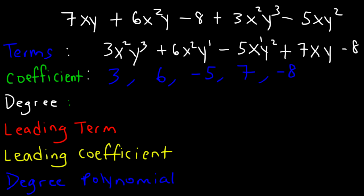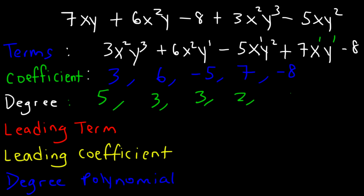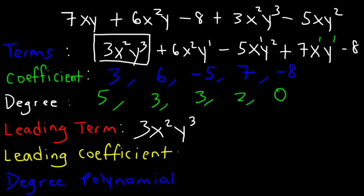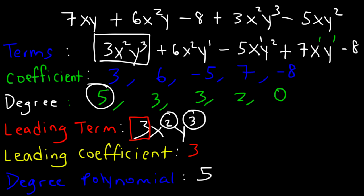The degree of each term is found by adding the exponents. For 3x squared y cubed: 2 plus 3 is 5. For 6x squared y: 2 plus 1 is 3. For 5xy squared: 1 plus 2 is 3. For 7xy: two invisible ones add up to 2. The constant is degree 0. The leading term is 3x squared y cubed with the highest degree. The leading coefficient is 3, and the degree of the polynomial is 5.